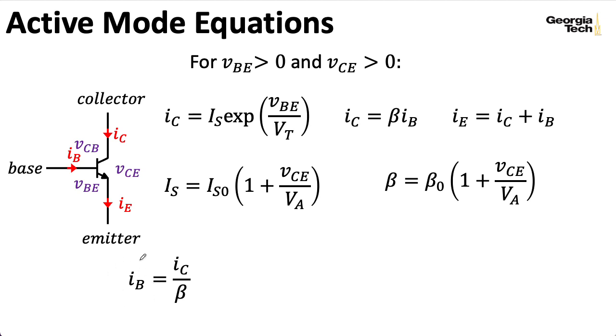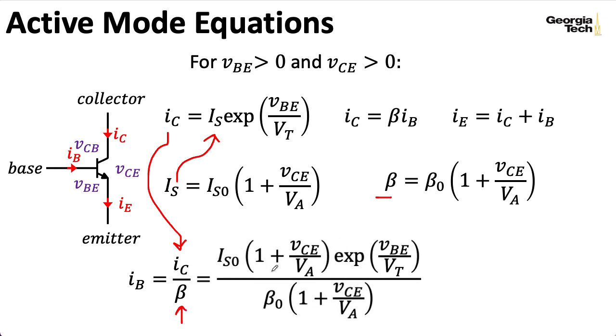Let me expand this expression for the base current out a little bit. So, we'll take this expression for IS and plug it in here. And take this expression for IC and plug it in here. And we'll take the expression for beta and plug it in down here. And then we can write this monstrosity. The main thing to notice here is that these 1 plus VCE over VA terms wind up canceling.